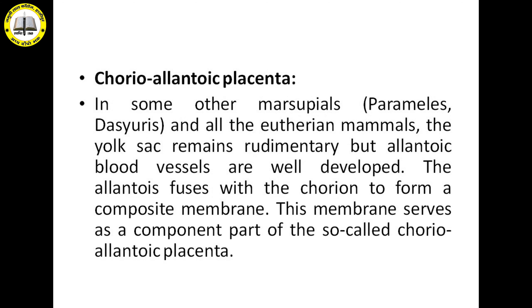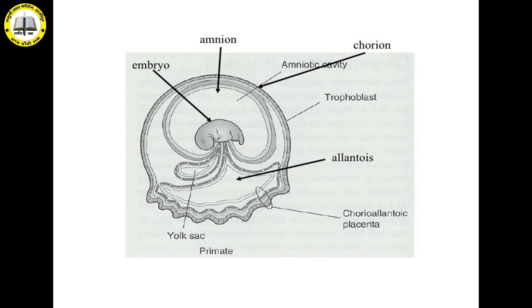In chorio-allantoic placenta, which develops in marsupials, the yolk sac remains small. But the allantois develops and the allantoic membrane fuses with the chorion. The chorion, as we know, is the extra-embryonic membrane that comes into contact with maternal tissue. In chorio-allantoic placenta, the yolk sac is small, as seen in the diagram, but it develops fully and fuses in the lower portion with the chorionic mesoderm. The chorionic mesoderm and allantoic mesoderm fuse to form a highly vascularized structure. This kind of placenta is known as chorio-allantoic placenta.